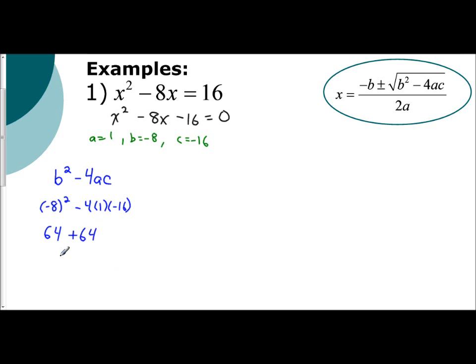So my discriminant, the value of my discriminant, is 128. That is positive. The discriminant is greater than 0. It's a positive number. Therefore, that means I am going to have two real solutions.